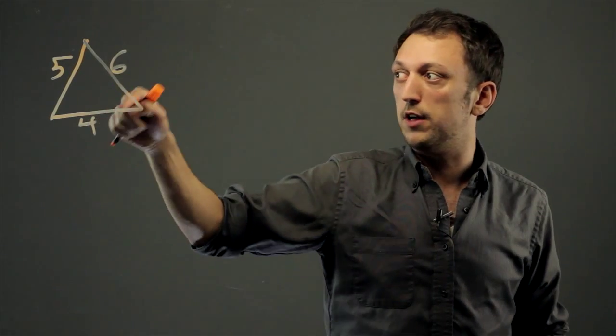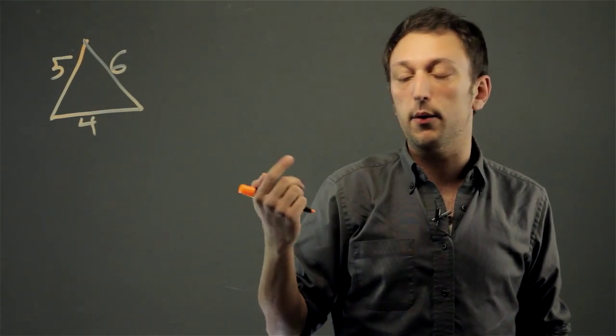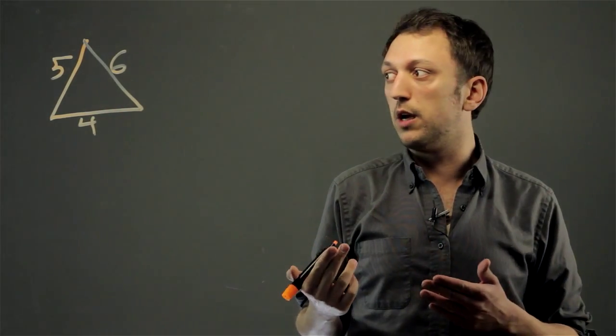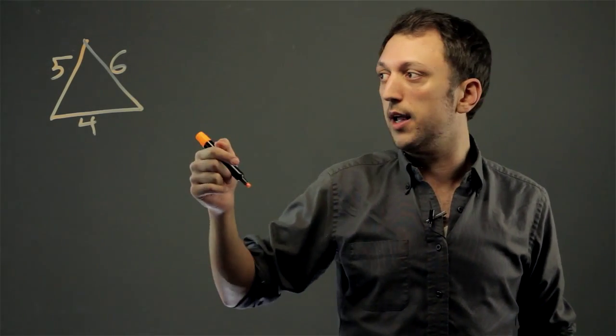That's it. You just put the sides together and create a triangle. However, if you've been given three numbers, you have to be careful that they can actually create a triangle.